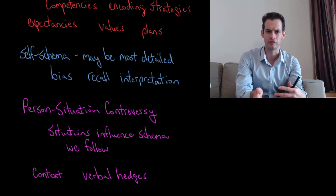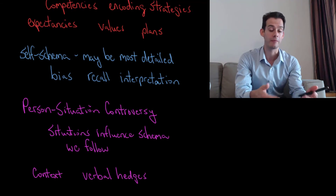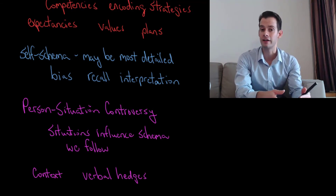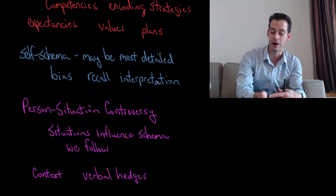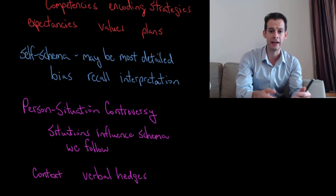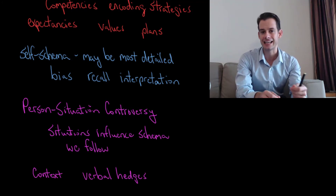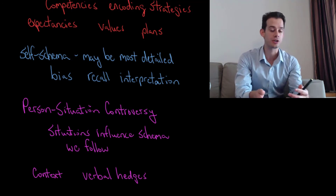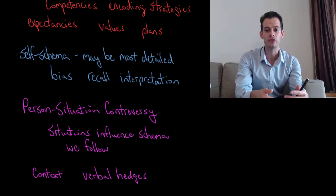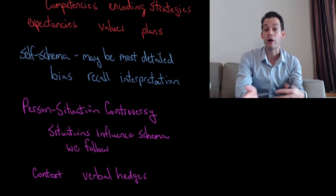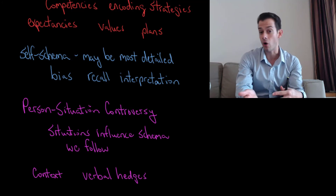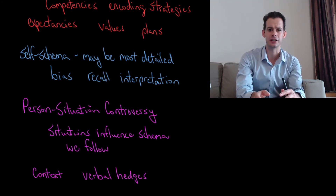We recognize this person-situation controversy in our everyday life when we talk about the behavior of others, because often we put things into context. We recognize that people can act quite differently in different situations. For example, Jane is withdrawn and quiet in class, but she's really wild and outgoing at parties — we're recognizing that she's not just a single version of Jane. The situation brings out certain qualities or not. We also use verbal hedges, like saying John is shy around new people, recognizing that John isn't always shy, but in that situation he feels uncomfortable and behaves in a more shy manner.